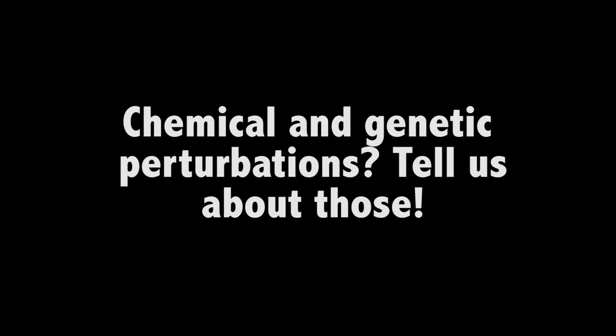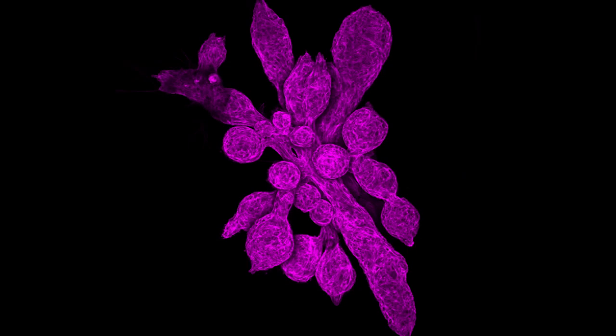Since the advent of this technology, we've been studying how different chemical and genetic perturbations affect the growth and development of the mammary tissue. Here we show a normal organoid without any perturbations, and what you can see are these beautifully organized structures with milk-producing lobes at the ends.